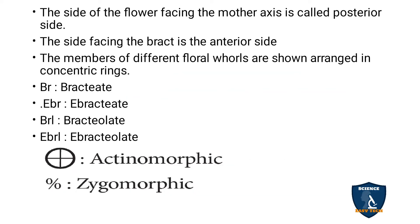In the floral formula, BR represents bracteate — presence of bract. EBR represents ebracteate — absence of bract. BRL represents bracteolate — presence of bracteoles. EBRL represents ebracteolate — absence of bracteoles.